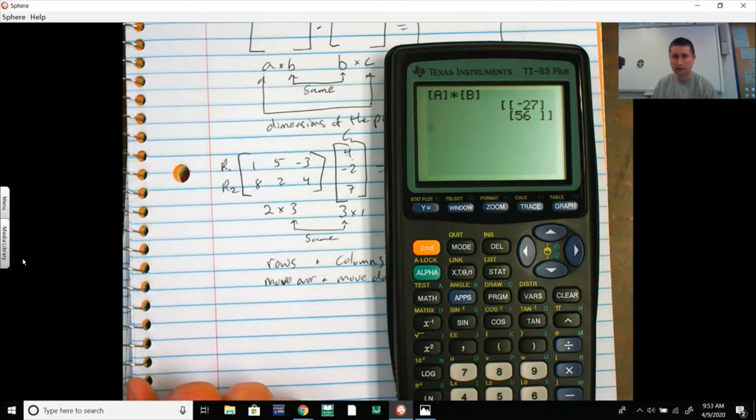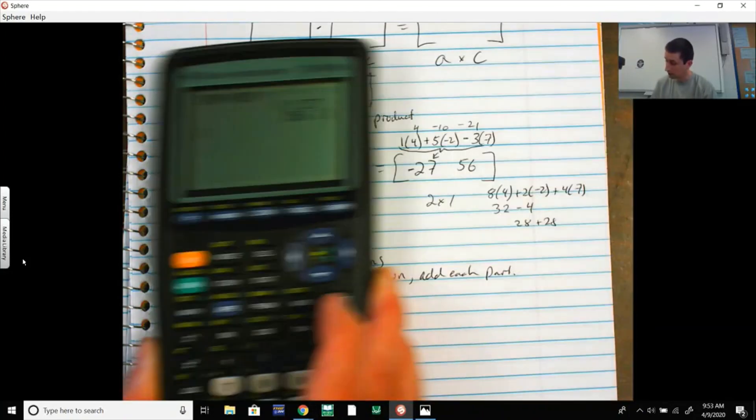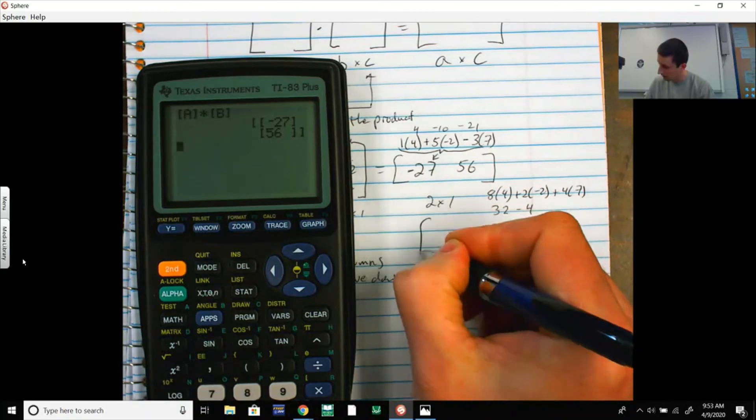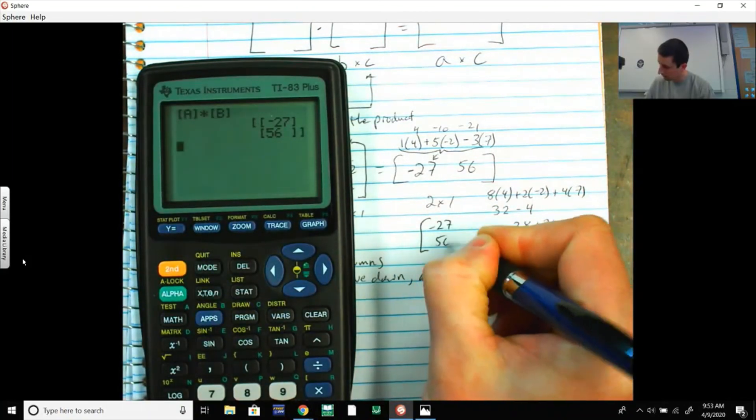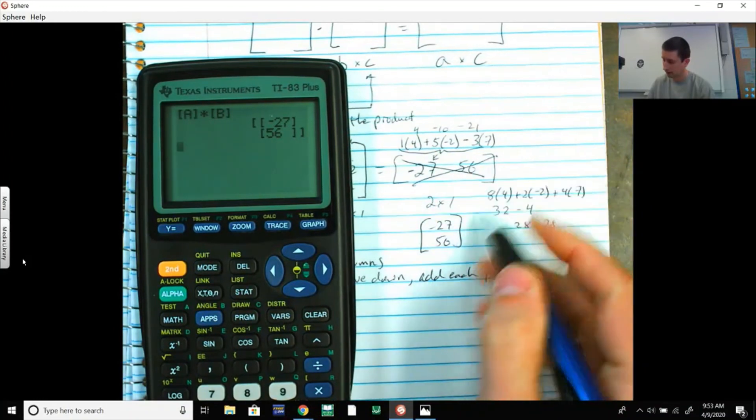-27, 56. That's absolutely right. It should be two rows and one column. I'm sorry, it should be -27, 56 like that. This is a 1 by 2, not a 2 by 1. -27, 56. I stand corrected. Go calculators.